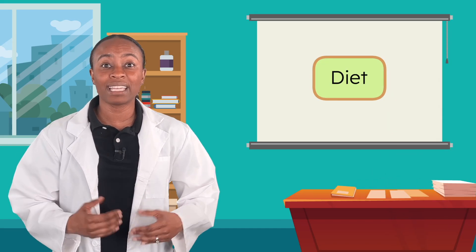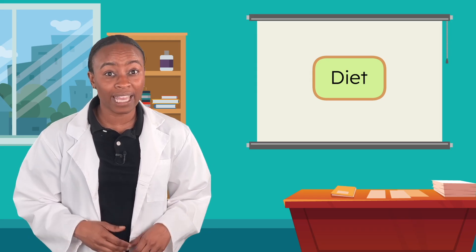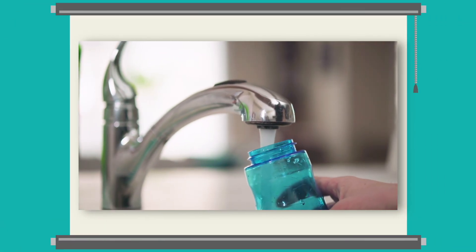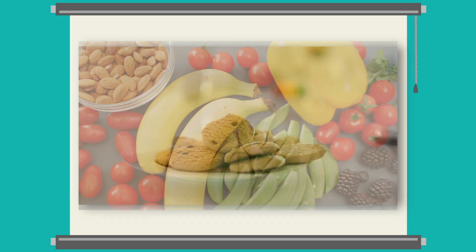Next on the list is a healthy diet. A diet is a plan for what foods you eat every day. Some parts of a healthy diet are drinking plenty of water, eating fruits and vegetables, and not having too many sugary or salty snacks. It's okay to have those treats sometimes, but our bodies need more than just snacks.